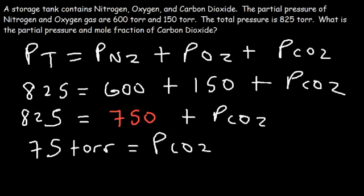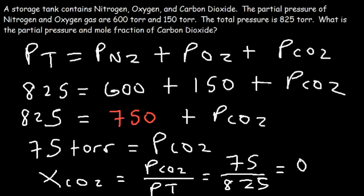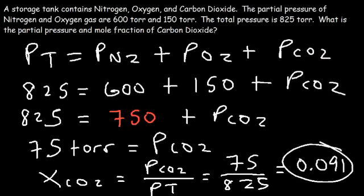Now that we have the partial pressure of CO2, we can calculate its mole fraction: 75 divided by 825 equals approximately 0.091. So about 9.1 percent of the molecules in the container is carbon dioxide. That's it for this video — thanks for watching.